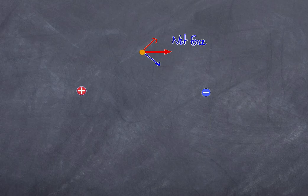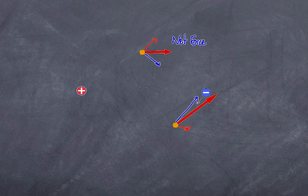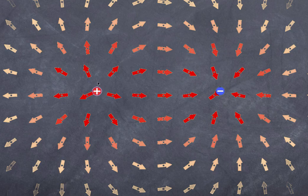If I place a second test charge at a different position, the direction it goes can be explained using vectors. The force due to the positive charge may be relatively weak in one direction, and the force due to the negative charge relatively strong in another direction. The resulting net force vector is approximately the sum of these two vectors. As a result, the field lines arc around between the two charges.